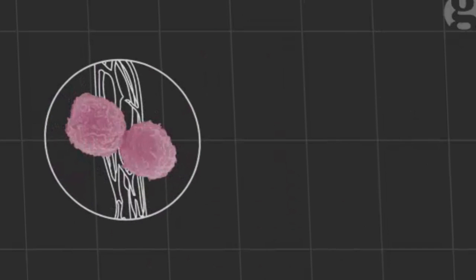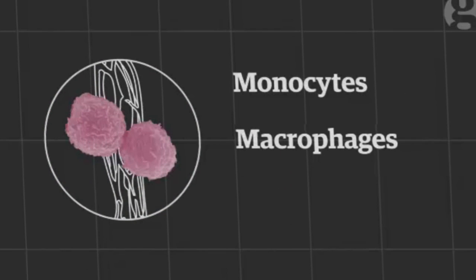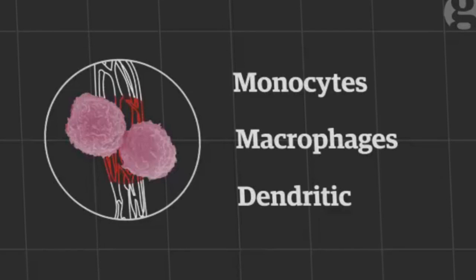Once inside, the virus quickly infects immune cells in the body known as monocytes, macrophages, and dendritic cells. These spread the infection around the body through the bloodstream and probably the lymphatic system as well.